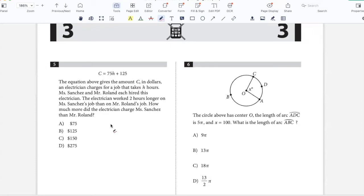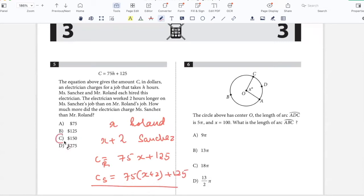Let's say the electrician worked for X hours at Mr. Rowland's job, so he worked for X plus 2 hours at Sanchez's job. Cost for Rowland would be 75X plus 125, and cost for Sanchez would be 75 times X plus 2 plus 125. If we subtract the two, it would be 75 into 2, so $150.